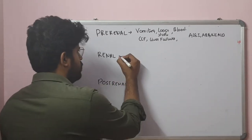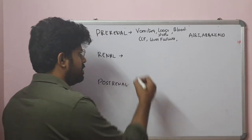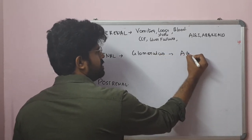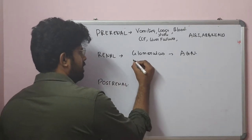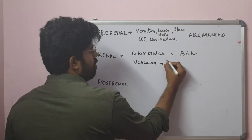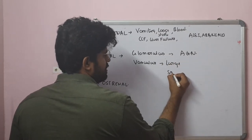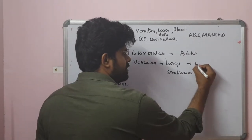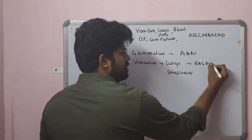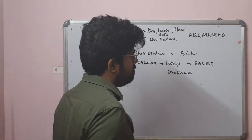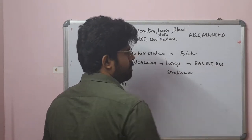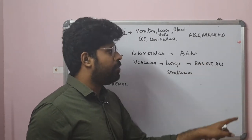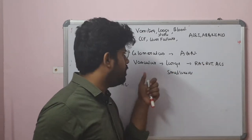The intrinsic renal AKI can be classified based on the structure involved. It can involve the glomerulus — acute glomerulonephritis or nephrotic syndrome. Then vascular causes, either large vessel or small vessel. Large vessel disease includes renal artery stenosis, renal vein thrombosis, abdominal compartment syndrome, and renal artery dissection.